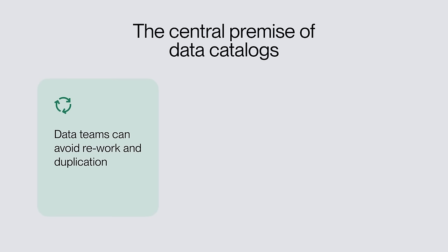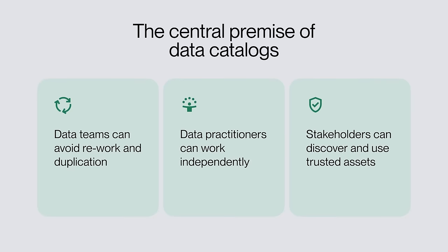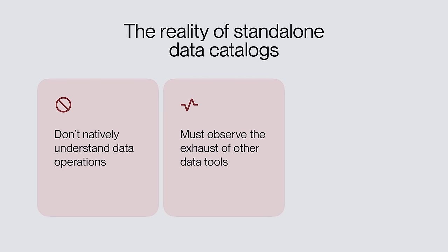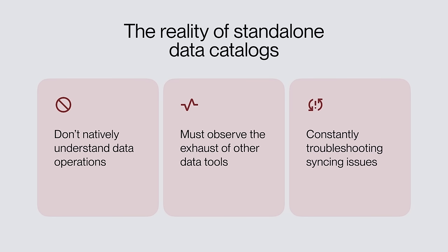As your organization scales, the number of assets you have to manage also scales. It doesn't take long before you end up with a large number of rarely used data models with poor documentation and questionable provenance. The central premise of data catalogs is to resolve all this by helping teams avoid rework and duplication and help data practitioners work more independently by enabling them to discover and use trusted data assets. Unfortunately, because standalone data catalogs don't have a native understanding of data operations, they have to create observations about the state of data assets from the exhaust of the loosely integrated tools that comprise the data platform. As a result, data engineering teams end up constantly troubleshooting problems of accuracy and timeliness in syncing the state of their data assets to the data catalog.